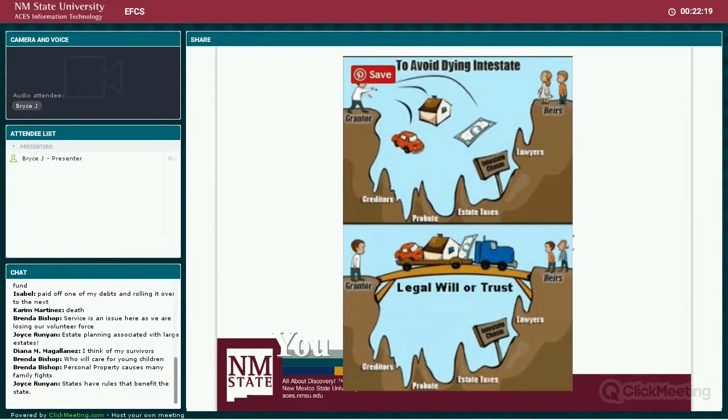The balance went to relatives who lived far away and he had never known. His neighbor received nothing. He wanted his possessions and property to go a certain place, and that did not happen because he had no will.